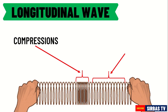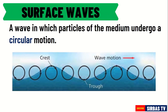The parts where the coils are spread out are called rarefactions. The last type is surface waves. A surface wave is a combination of both transverse and longitudinal waves, in which particles of the medium undergo a circular motion. An example of surface waves is waves produced in the ocean.